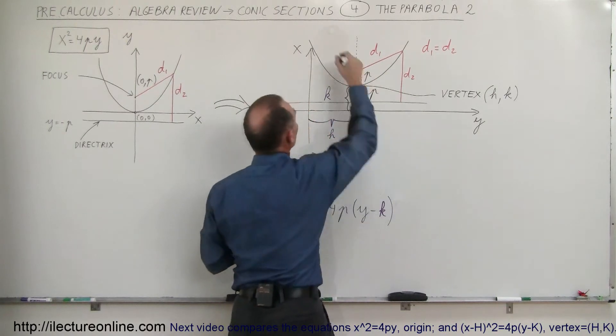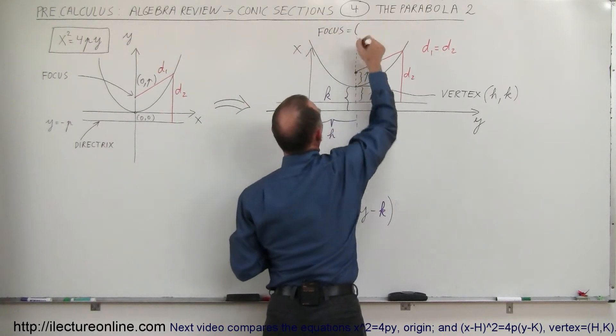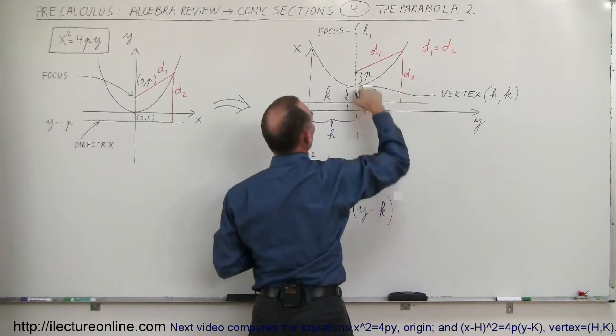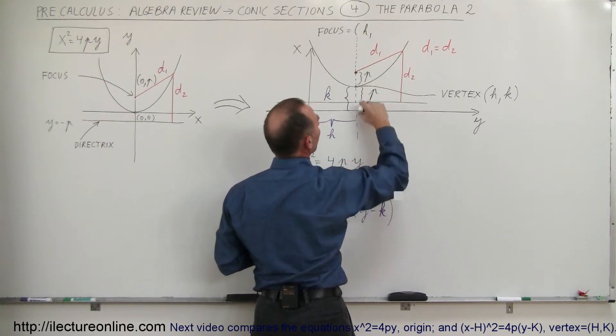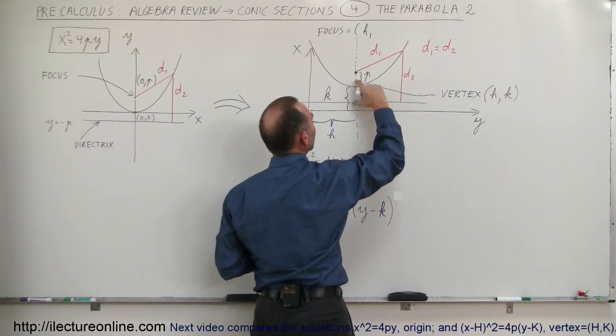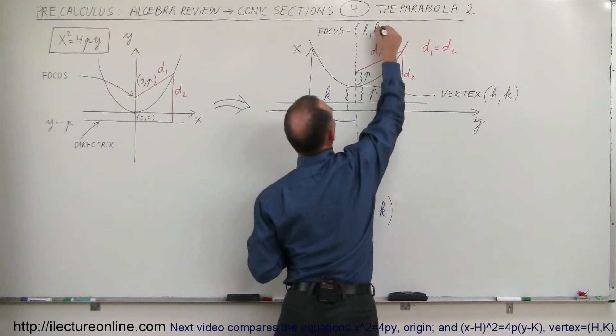And the y value would be k plus p. So the focus is equal to, for the x value it would be h, and for the y value it would be k plus p.